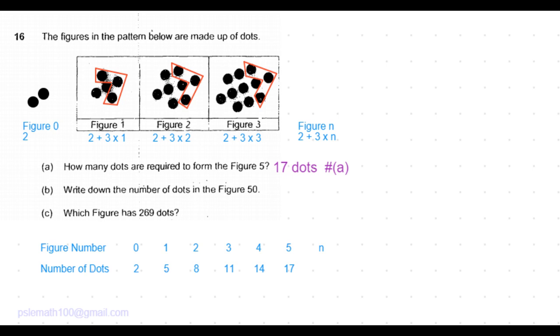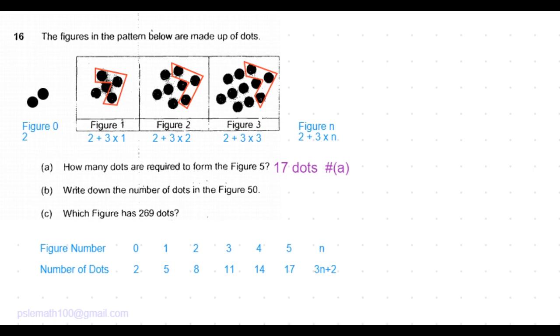So the formula would be 3 times the figure number plus a constant. The constant here is 2, which is the number of dots in figure 0. If you have trouble deriving formulas for pattern problems, you can go through the link that describes how to derive formula for constant difference method. Now we have derived formula for figure n, which is 3 times n plus 2, which is 3n plus 2.